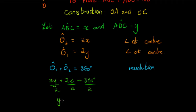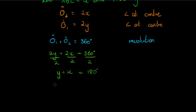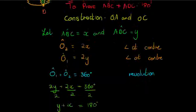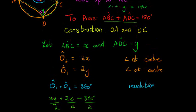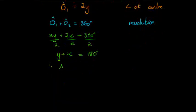And now I can just divide everything with a 2, because then I get Y plus X is equal to 180. In other words, I've now shown that this is true. ABC and ADC is equal to 180 degrees.